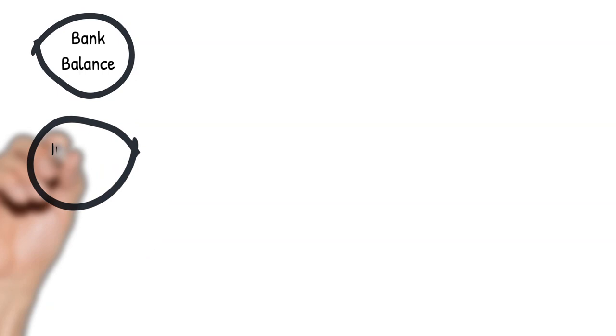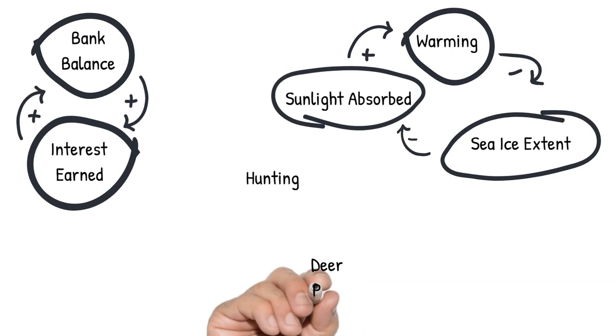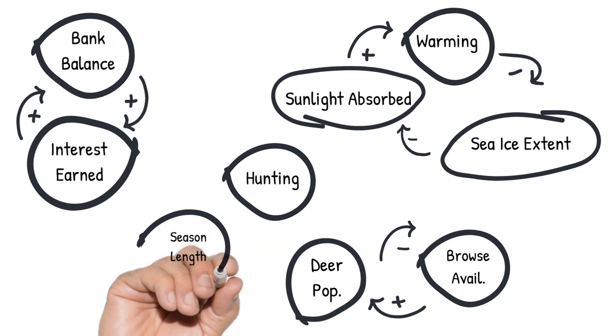Feedbacks explain lots of things. They explain why our bank accounts grow over time from interest. They explain why melting sea ice in the Arctic is accelerating global warming. They explain why fish and game populations rise and fall in response to changes in food availability and hunting and fishing pressure.